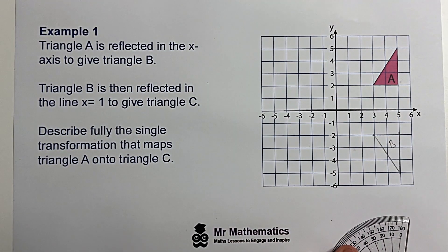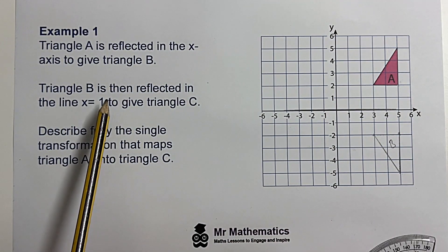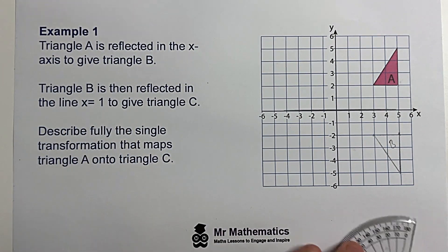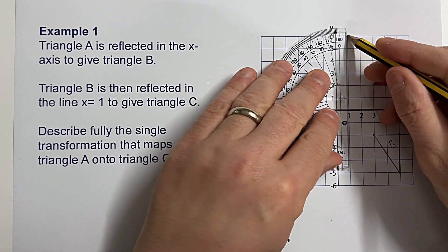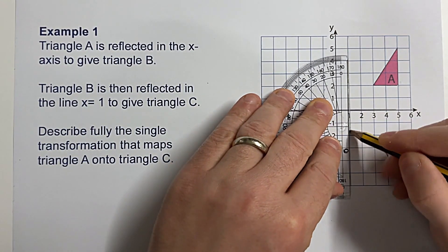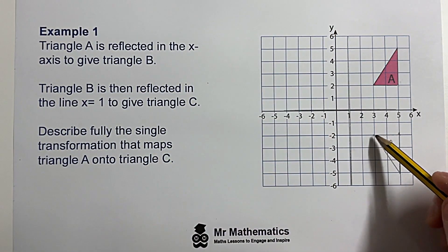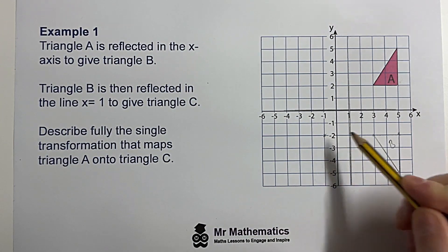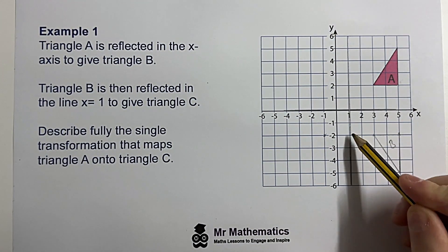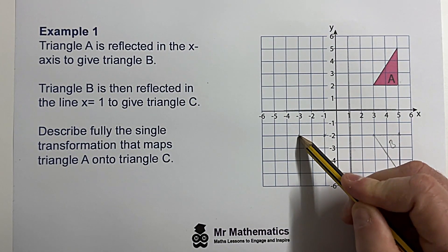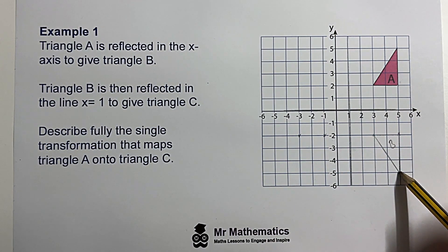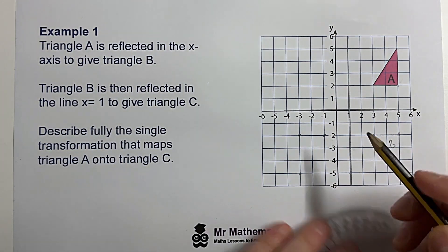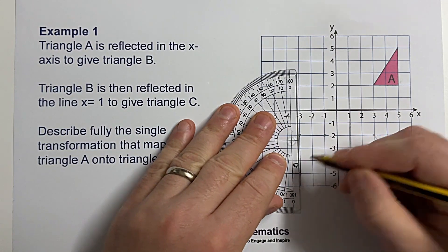Now we need to reflect triangle B in the line x equals one to give triangle C. X equals one is this line here. This point passes two units through to the other side, this point goes four units to the other side, and then this one goes four units again, so it goes to here. Then we recreate this image.